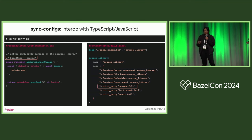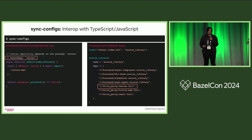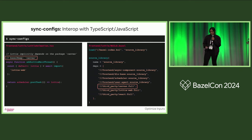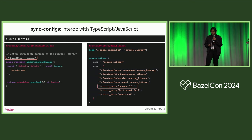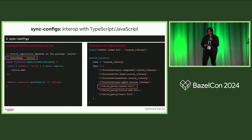This also comes in handy if you're dealing with string configs — ESLint configs, Babel configs, things that express dependencies as strings. You can annotate them using the same method.